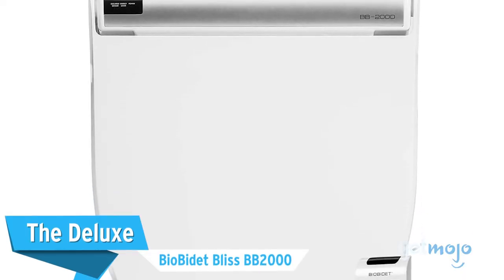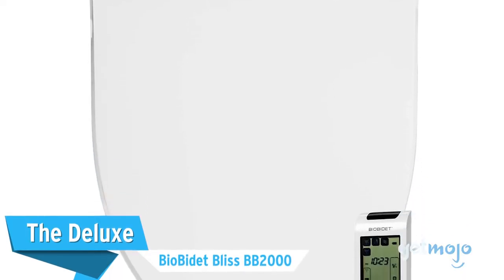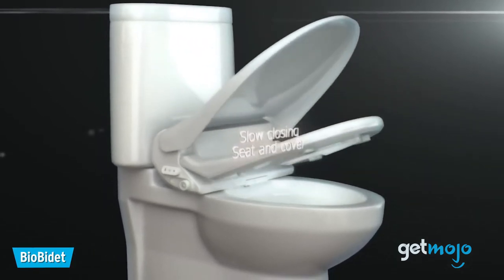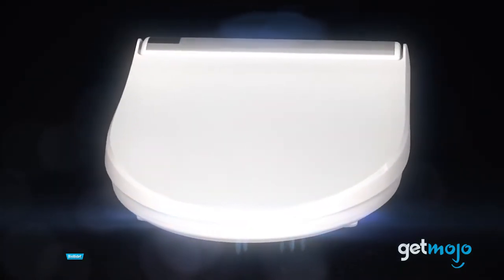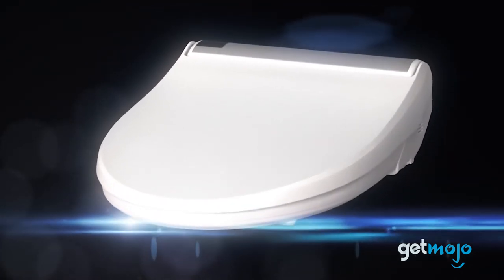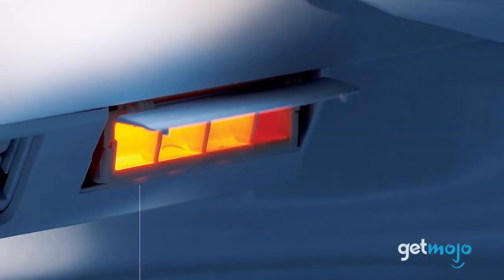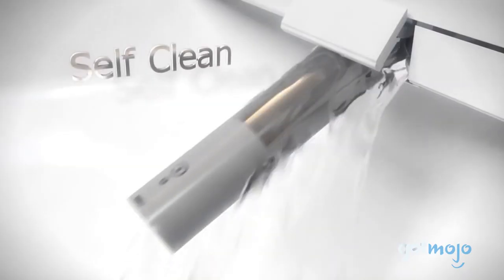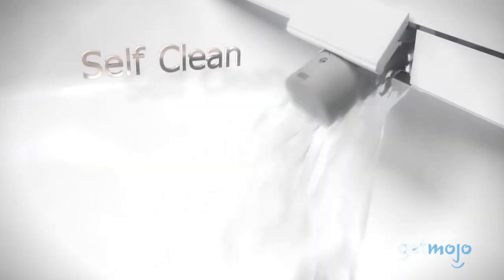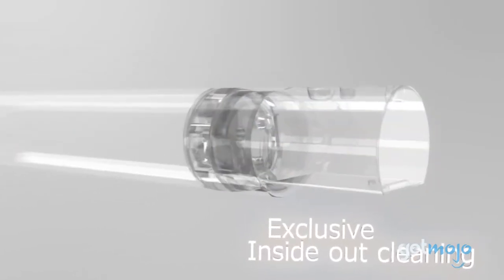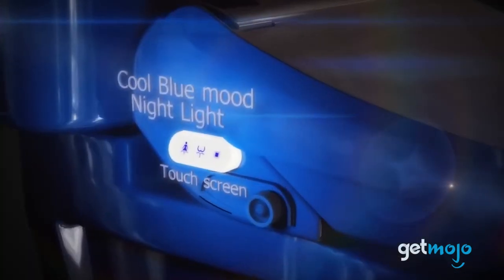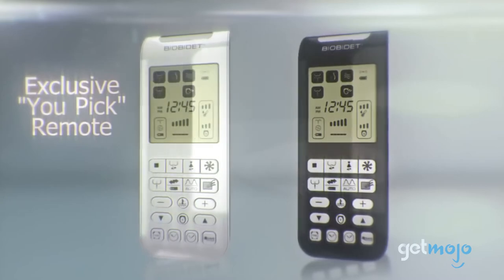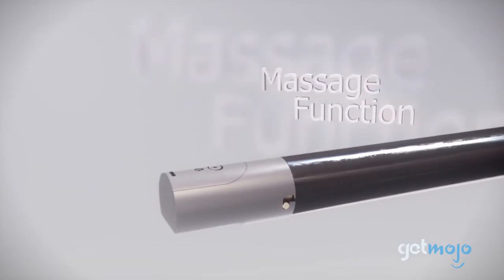The Deluxe. The BioBidet Bliss BB2000. If you like to prioritize comfort just as much as hygiene, then the BB2000 offers brilliant value for money, even at $700. Sure, it has a heated seat and a warm air dryer, but it's the 3-in-1 self-cleaning nozzle that really sets it apart. Capable of cleaning itself inside and out after every use. Add to that its LED nightlight and illuminated remote control, and you have one of the most luxurious bidets on the market.